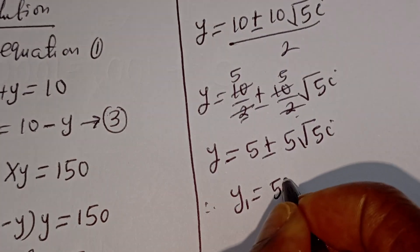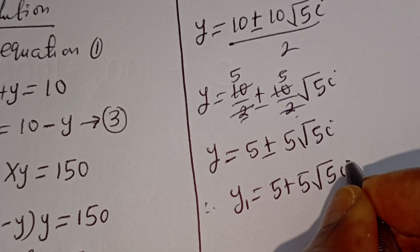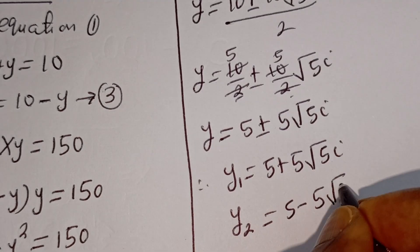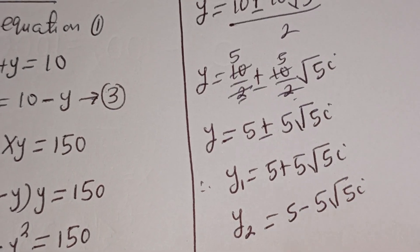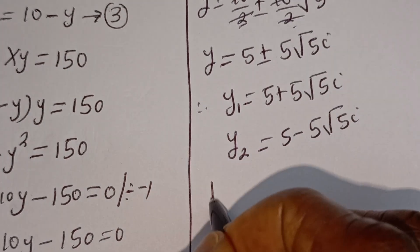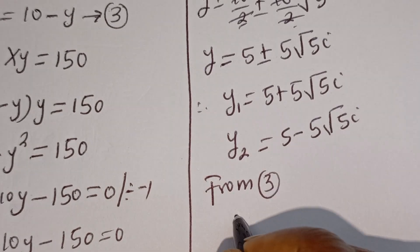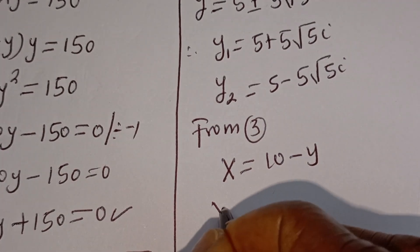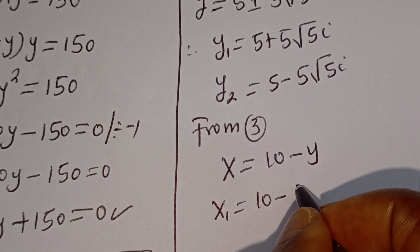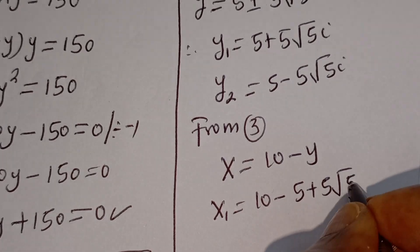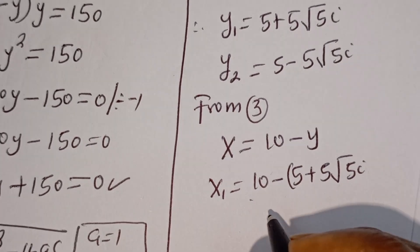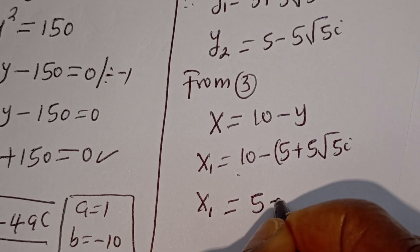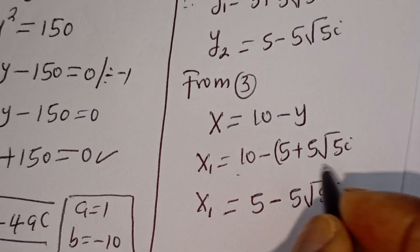Y is equal to 10 divided by 2, plus or minus (10 divided by 2) times root 5 times i. Therefore Y is equal to 5 plus or minus 5 root 5 i. So Y1 is equal to 5 plus 5 root 5 i, and Y2 is equal to 5 minus 5 root 5 i.